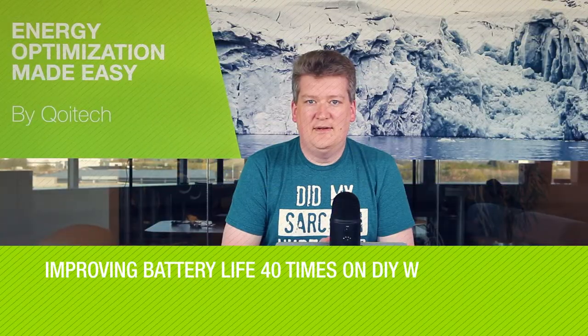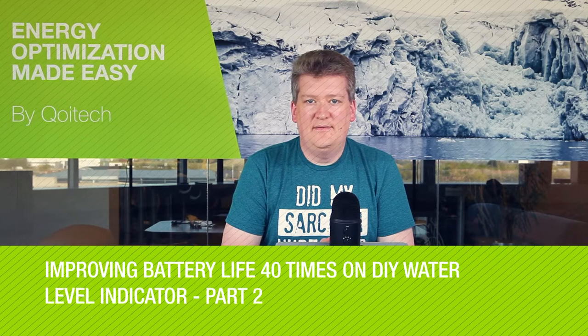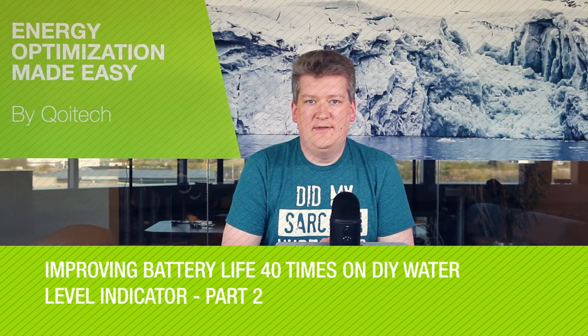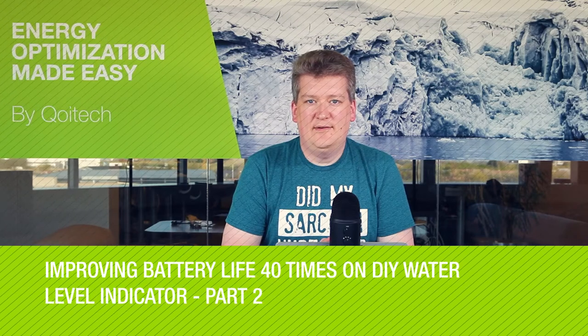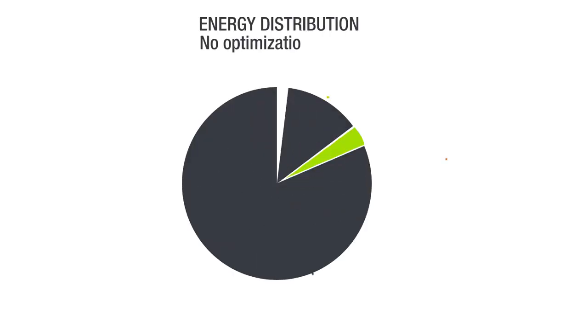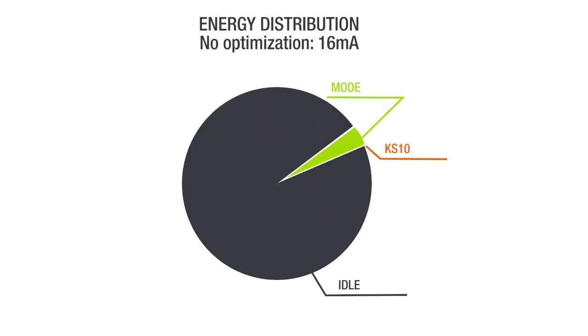Hi, it's Werner from Coitech. In the first video of the C-level indicator, we stepped through the basic functionality and measured the power consumption of the device. The result was an average of 16 milliamps, where 98% was consumed in idle mode, 2% by the modem, and 0.1% by the actual ultrasonic measurement.